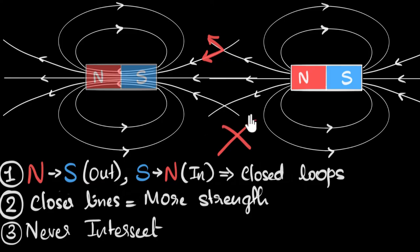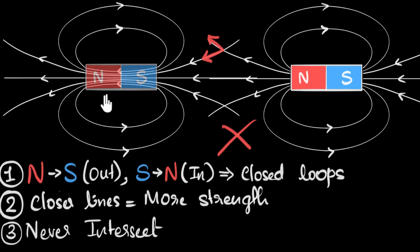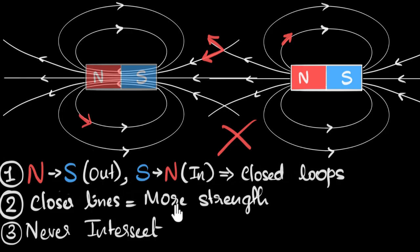In short, we represent the magnetic field by drawing imaginary lines called magnetic field lines. These field lines tell us the direction in which the north pole of a tiny magnet points at any location. The field lines always form closed loops, and wherever they are closer together, the field is stronger. They will never ever intersect.